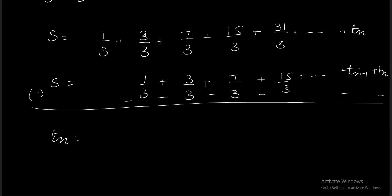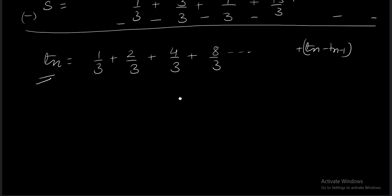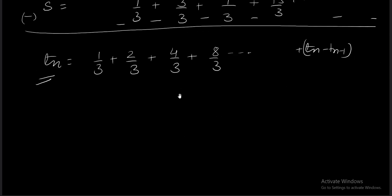After subtraction, t_n on the left side equals 1/3 + 2/3 + 4/3 + 8/3 + ... + (t_n - t_{n-1}). The series on the right hand side will give me the nth term of the original series, which is sigma 1/a_n.